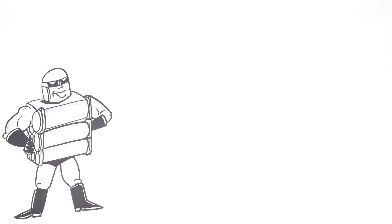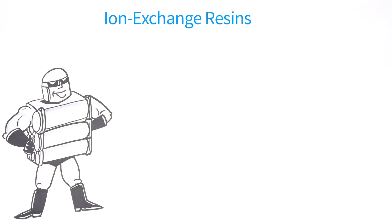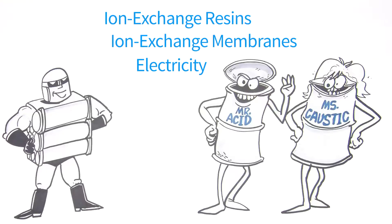IonPure CEDI modules use ion exchange resins, ion exchange membranes and electricity to separate impurities from water and deionize it. But they don't use those nasty chemicals.